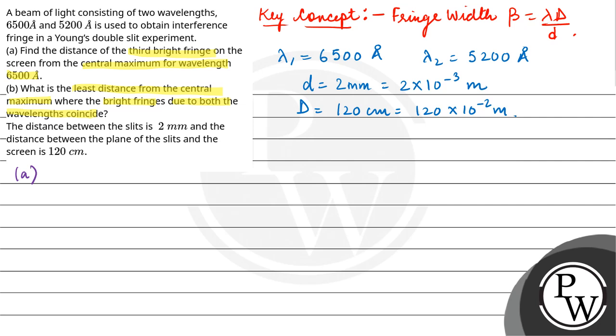First, find the distance of the third bright fringe on the screen from central maxima for wavelength lambda 1. So x3 would be 3 lambda D upon d.